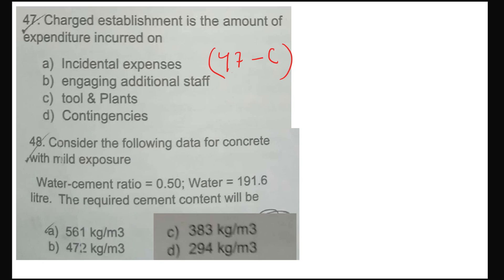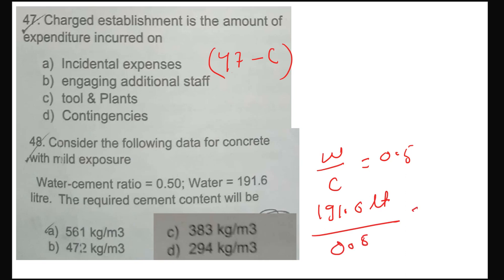For question 47, option number C will be correct. Work charge establishment is the amount of expenditure incurred on tools and plants — that is work charge establishment. For question 48, it is very easy: water-cement ratio is 0.5, water is 191.6 liters. Dividing by 0.5 gives cement = 383 kg per cubic meter.